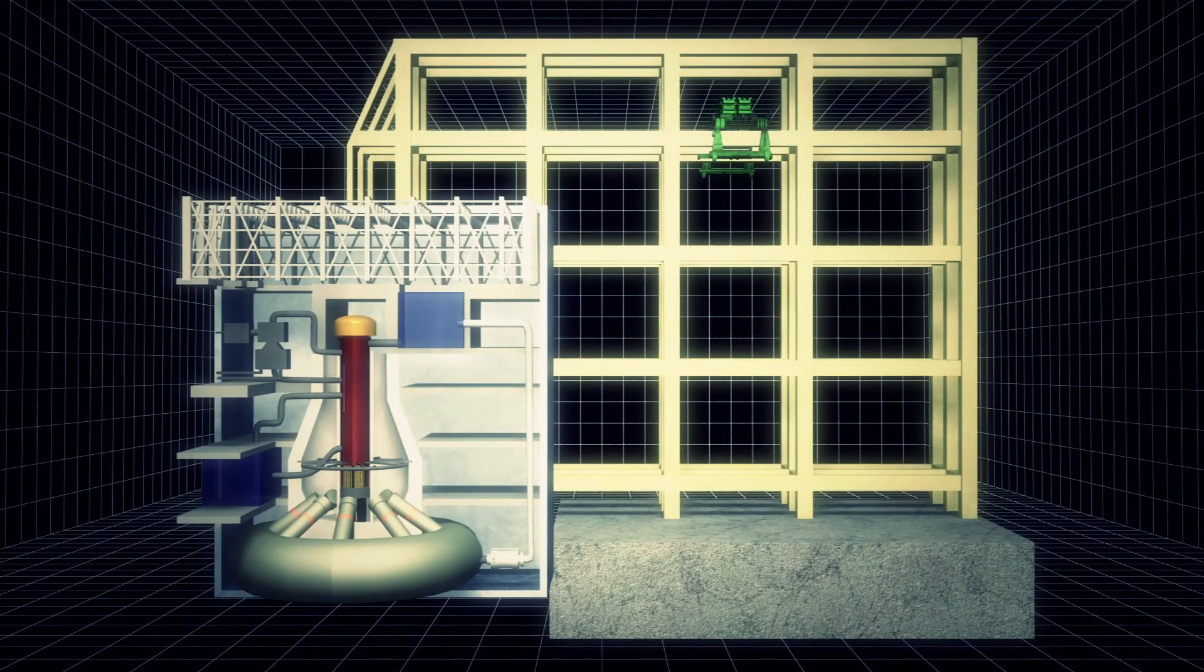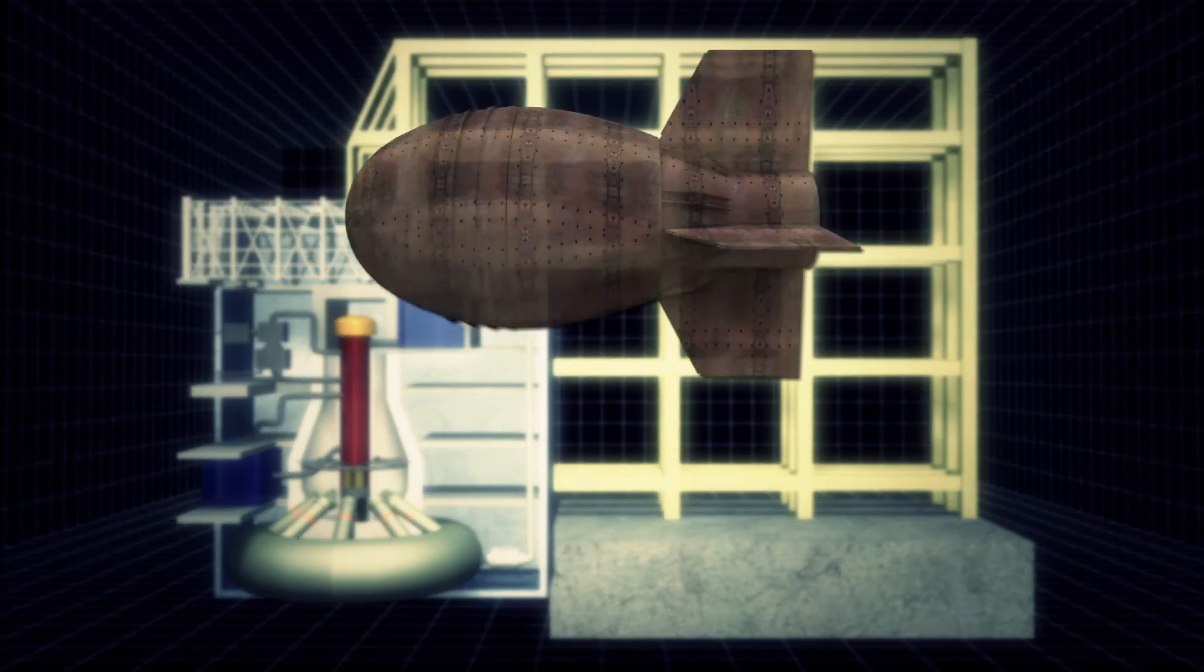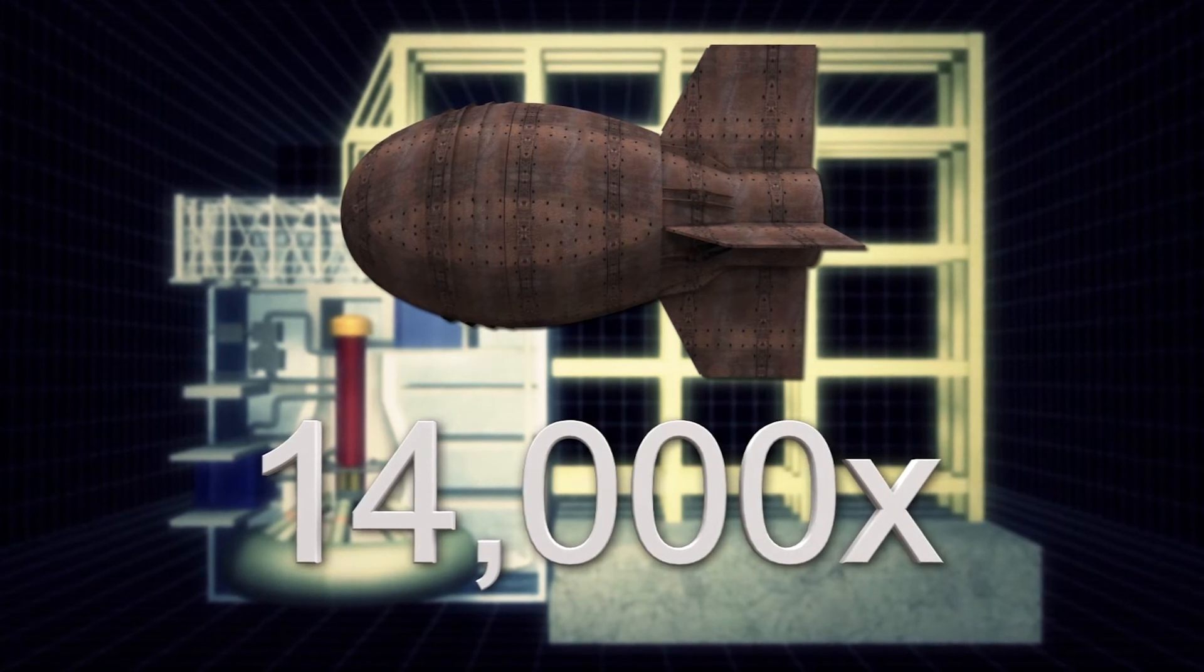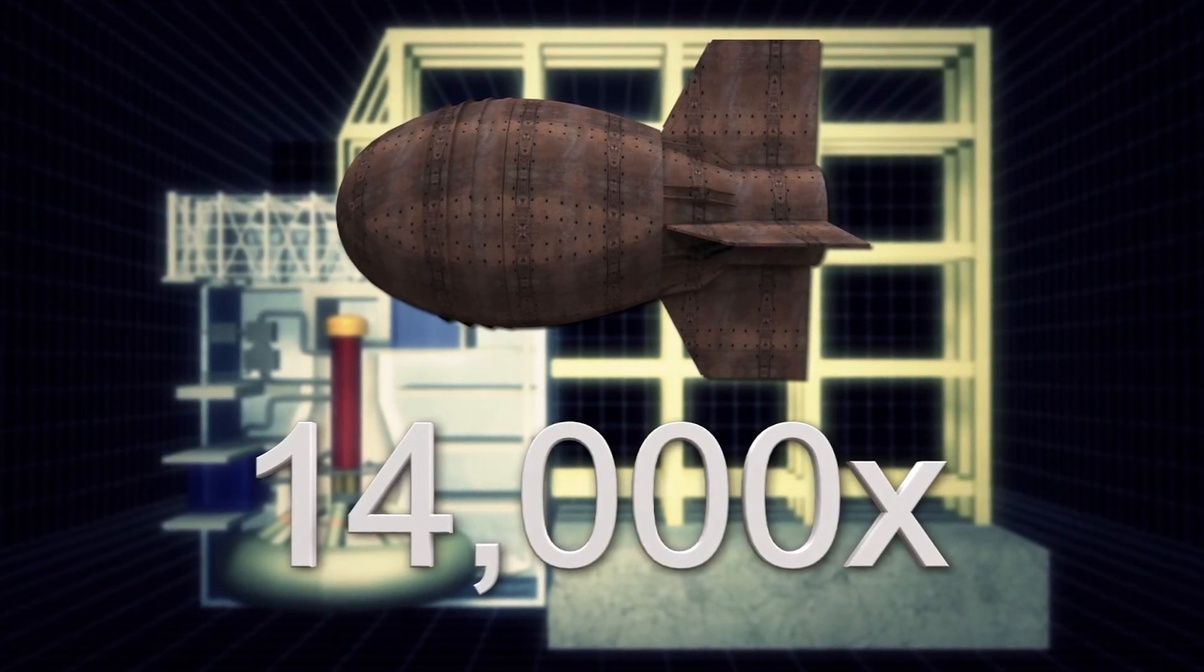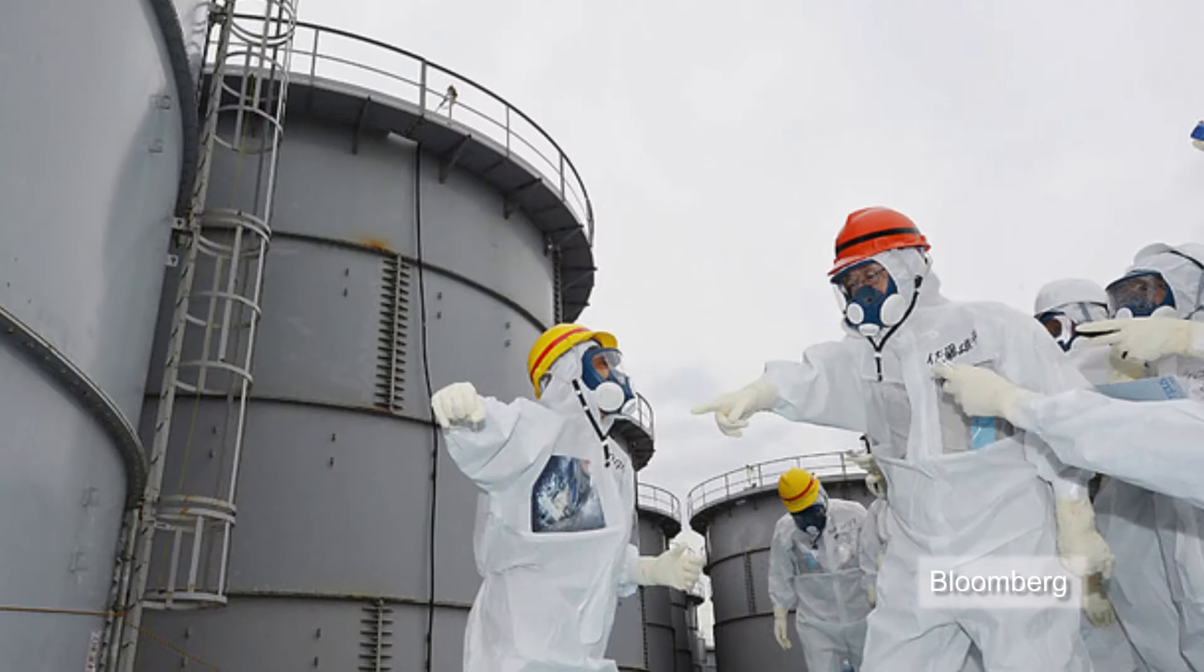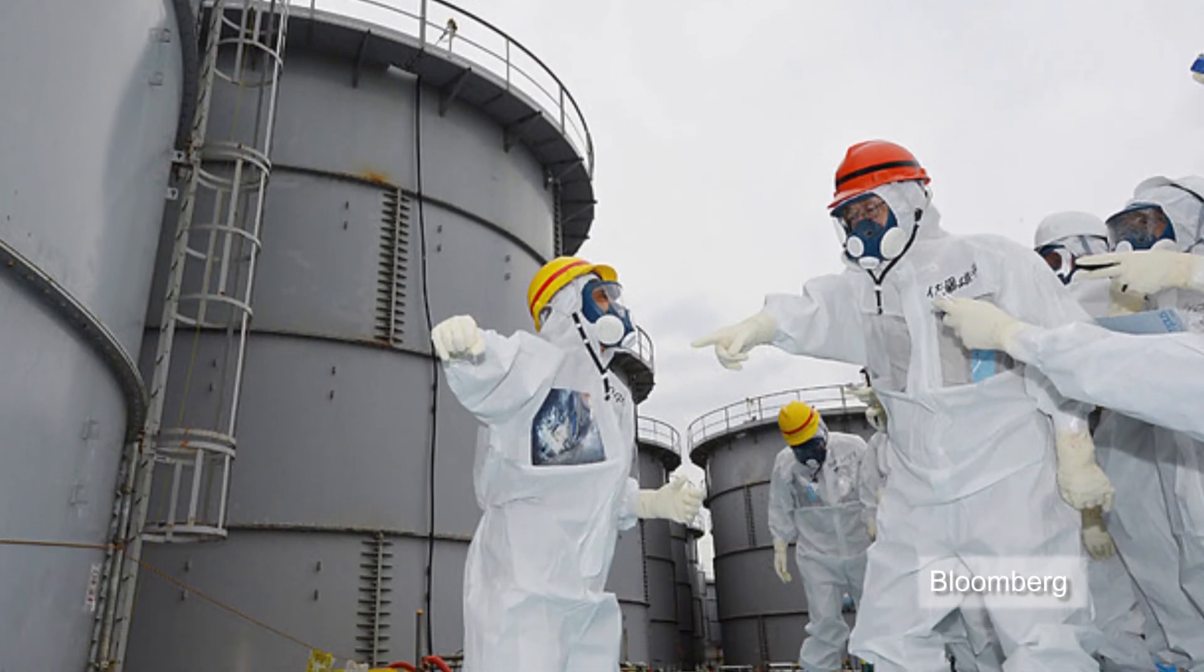Reactor 4 stores over 1,500 nuclear rods. The radiation level is 14,000 times the amount released by the Hiroshima atomic bomb. Any mishaps in the removal process can cause an explosion many times greater than the one in March 2011.